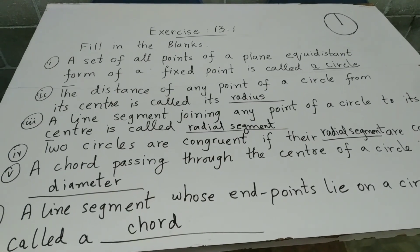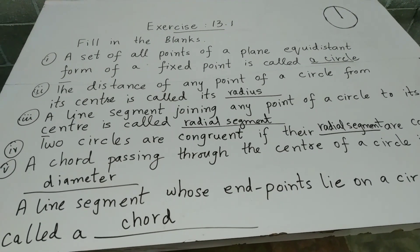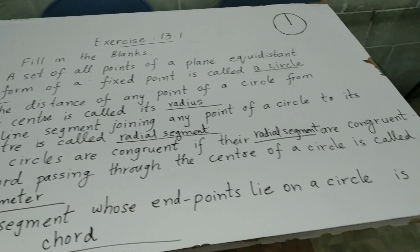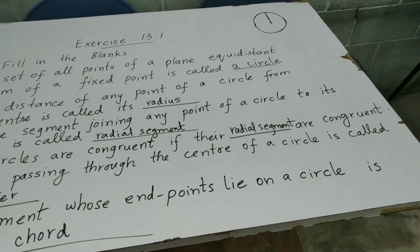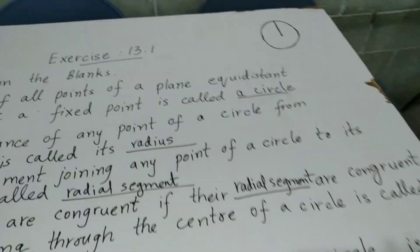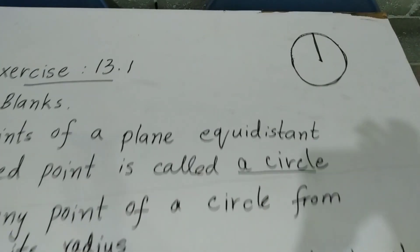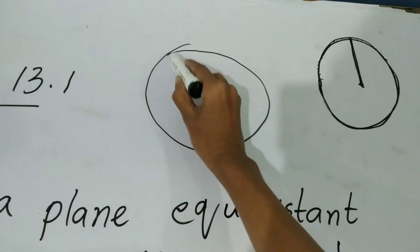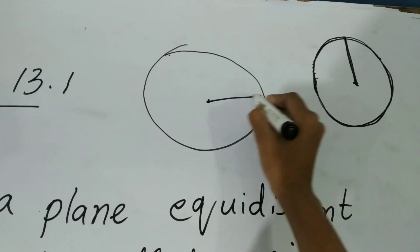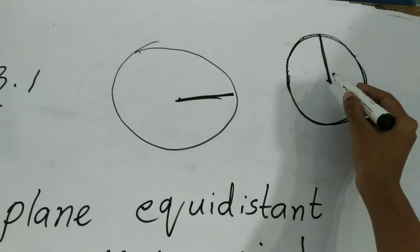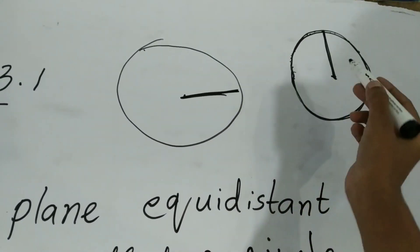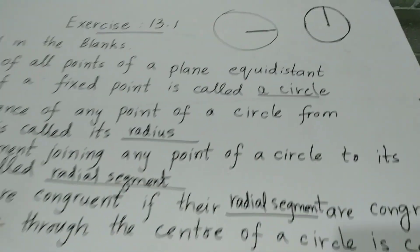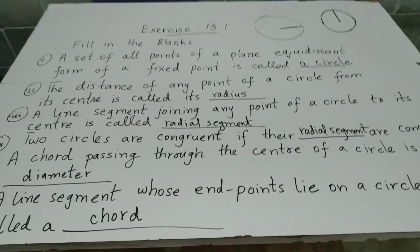Fourth point: two circles are congruent — दो circle बराबर होते हैं — if their radial segments are congruent. यहाँ two circles बने हुए हैं। अगर दोनों के radial segment same हैं, for example four centimeter each, तो वो circle congruent हैं, बराबर हैं.